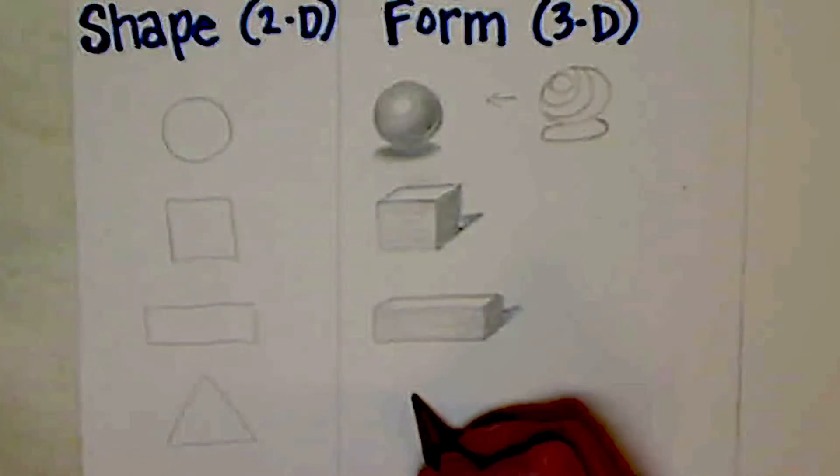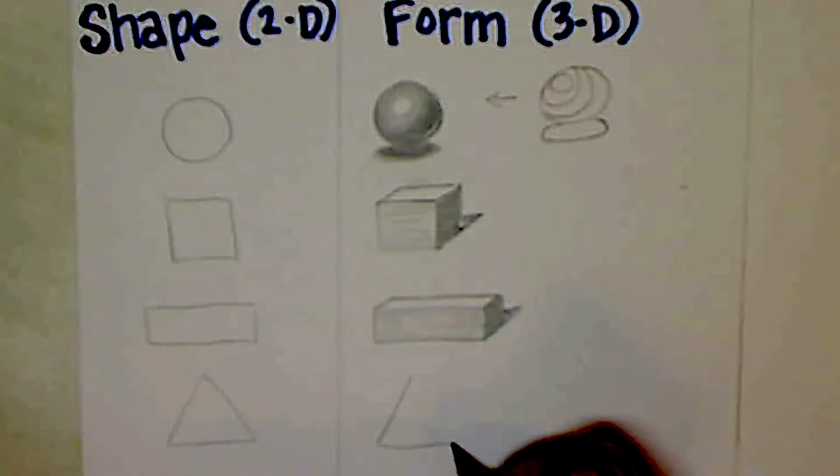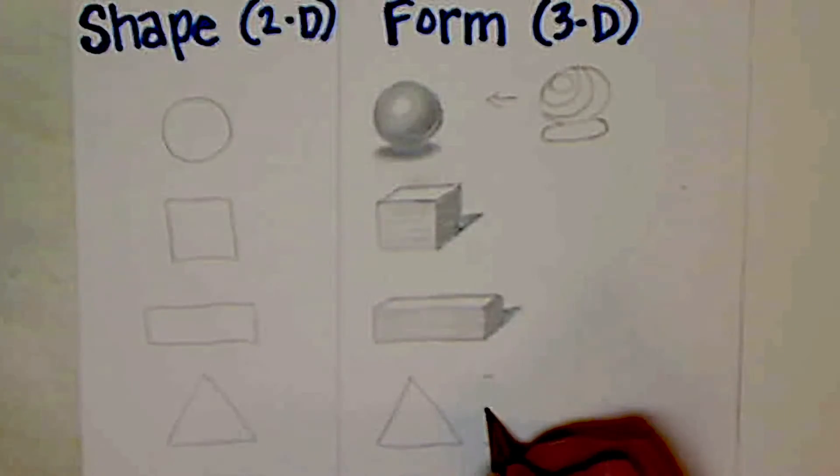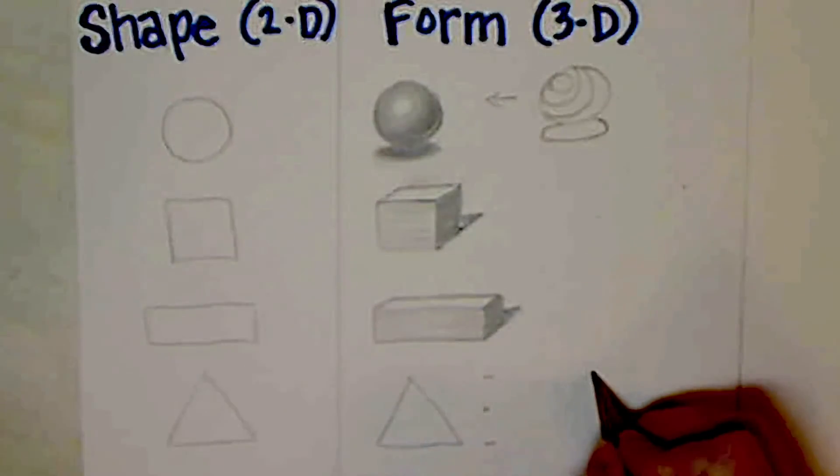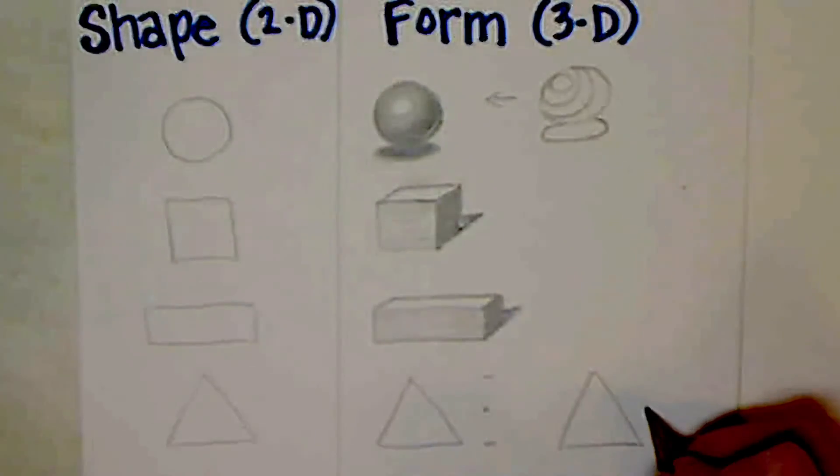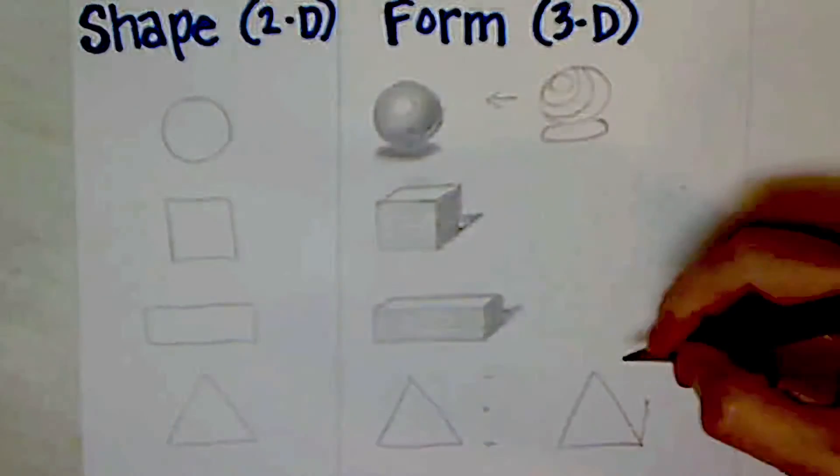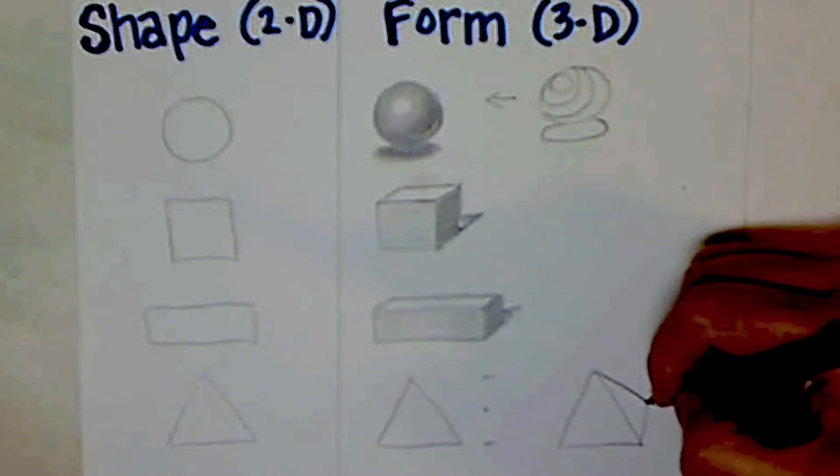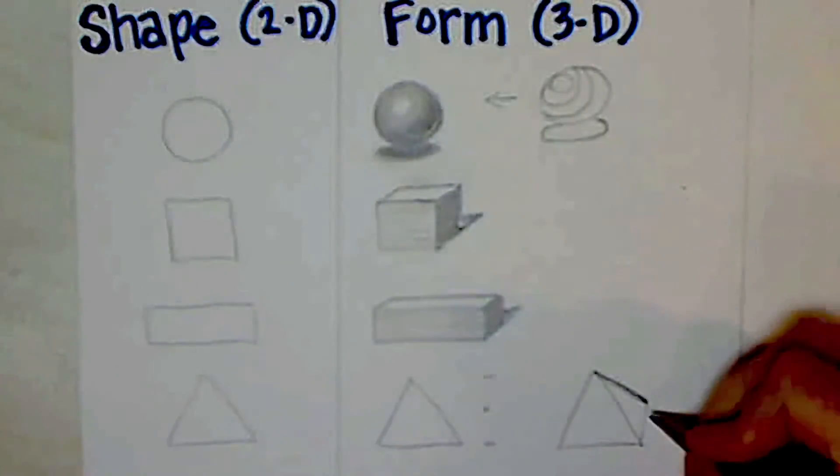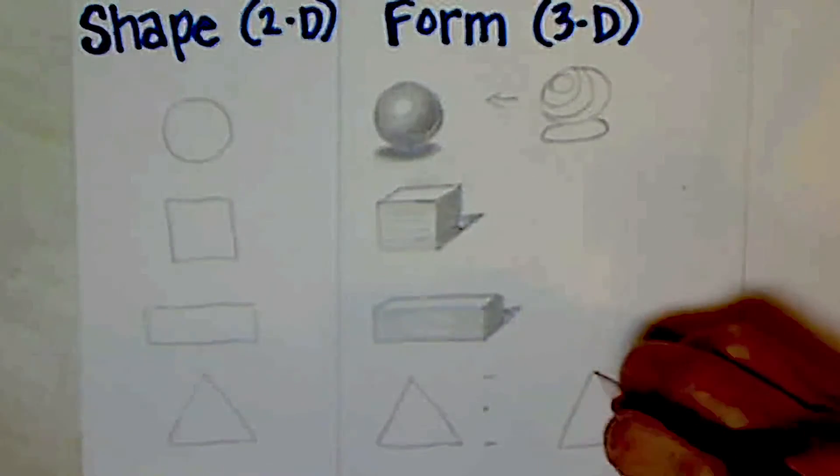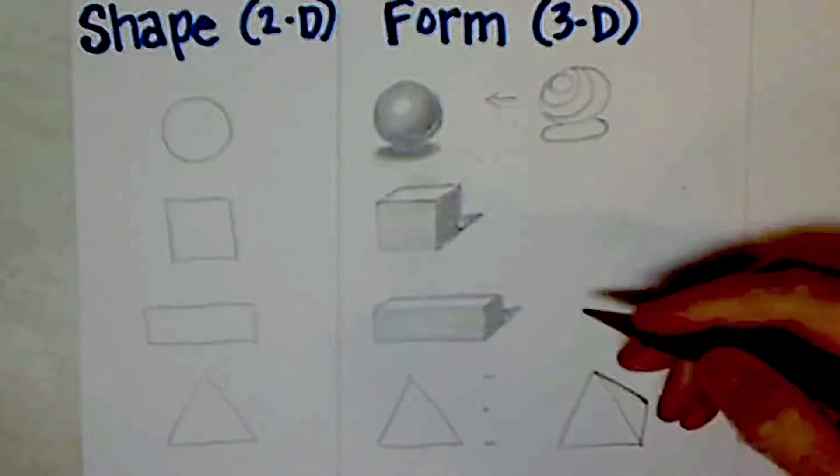Now for the triangle, you want to make your triangle again. This time you're going to measure how tall the triangle is and you're going to go to the midpoint. So if you were to draw the triangle, you're going to make a dot at that midpoint. And now you're going to connect it to the bottom and the top. And this is going to be a pyramid.